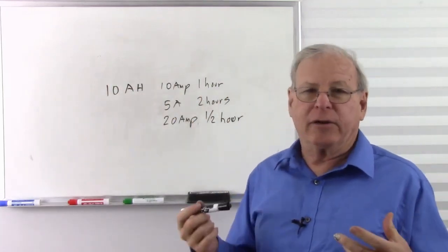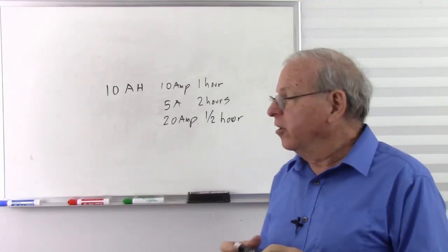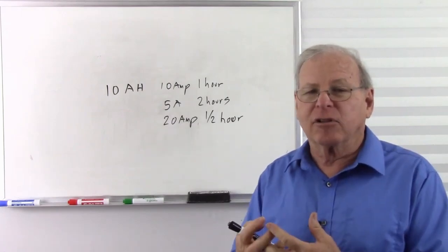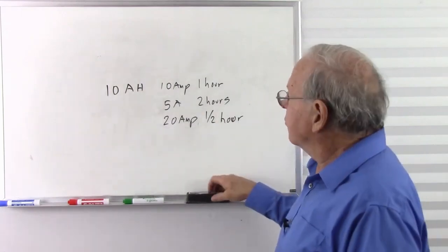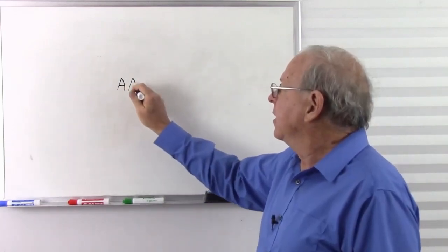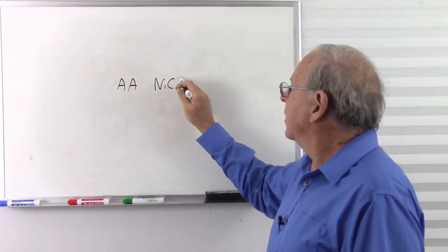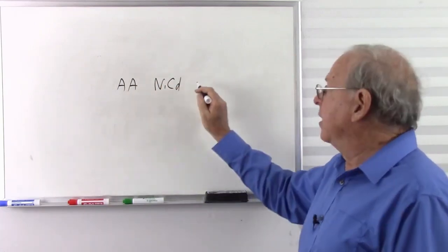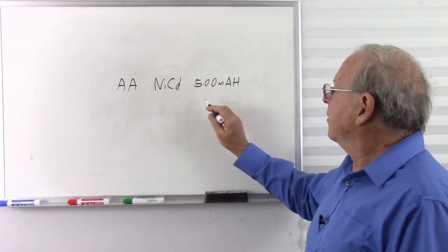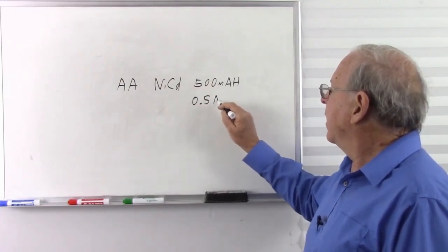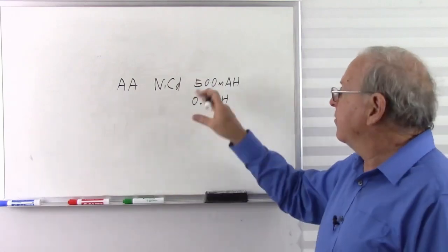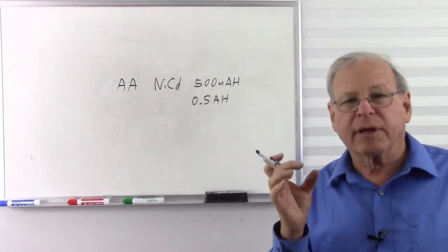That capacity is going to depend on its chemistry and its size. A physically bigger battery is going to have more bulk of chemistry in there and can last longer, with a longer amp hour rating. For example, a double-A nickel cadmium battery has an amp hour rating typically of 500 milliamp hours, or 0.5 amp hours. A bigger battery will have a bigger amp hour rating, and a smaller one will have a smaller amp hour rating.